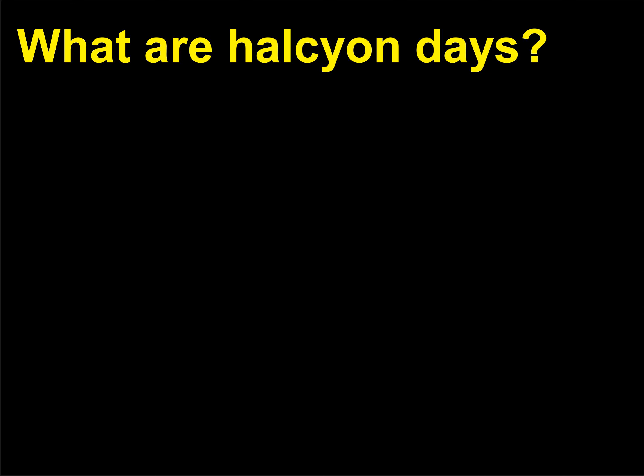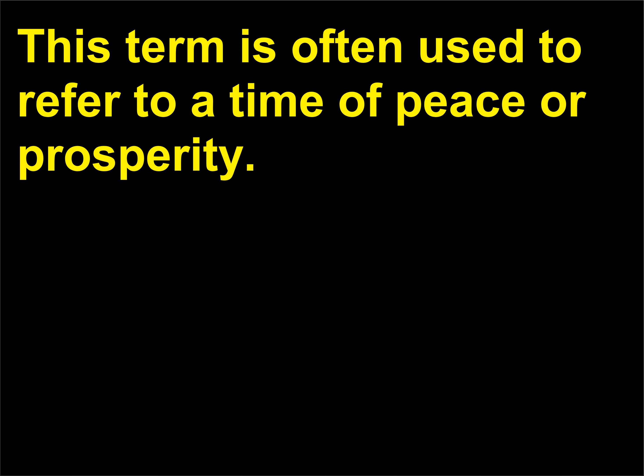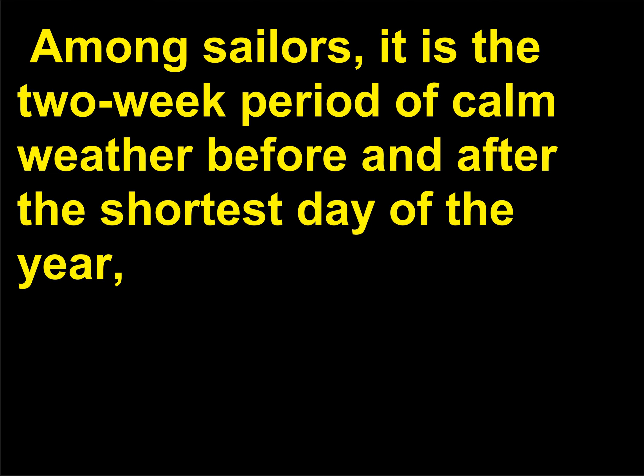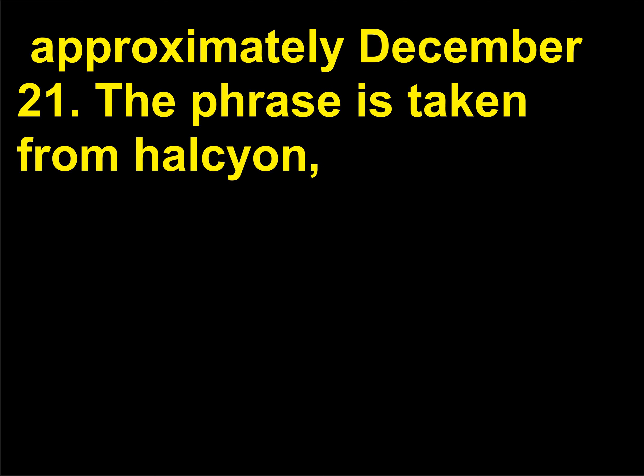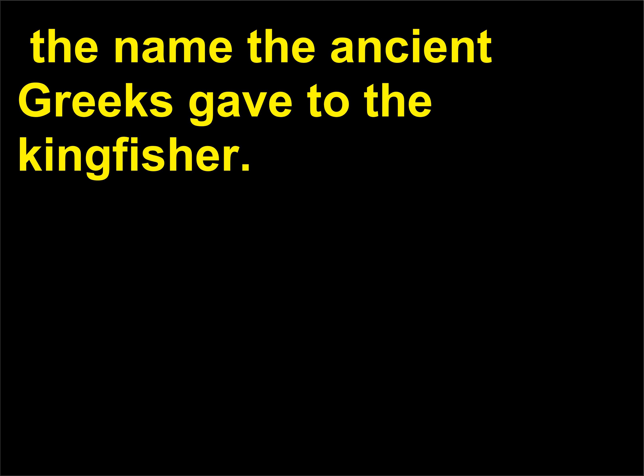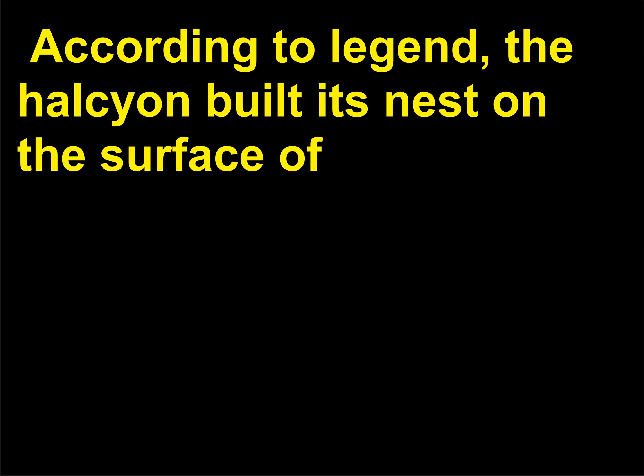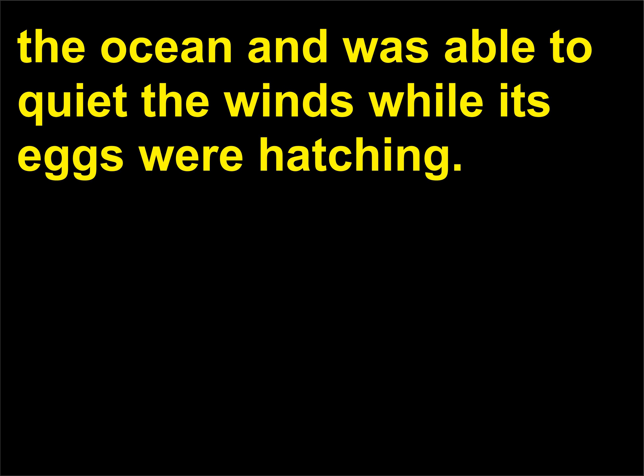What are halcyon days? This term is often used to refer to a time of peace or prosperity. Among sailors, it is the two-week period of calm weather before and after the shortest day of the year, approximately December 21. The phrase is taken from Halcyon, the name the ancient Greeks gave to the kingfisher. According to legend, the Halcyon built its nest on the surface of the ocean and was able to quiet the winds while its eggs were hatching.